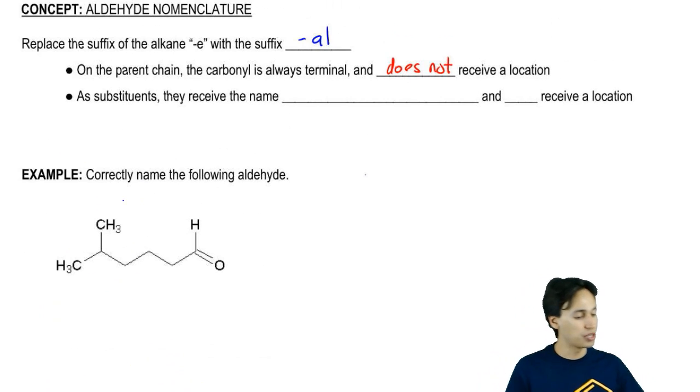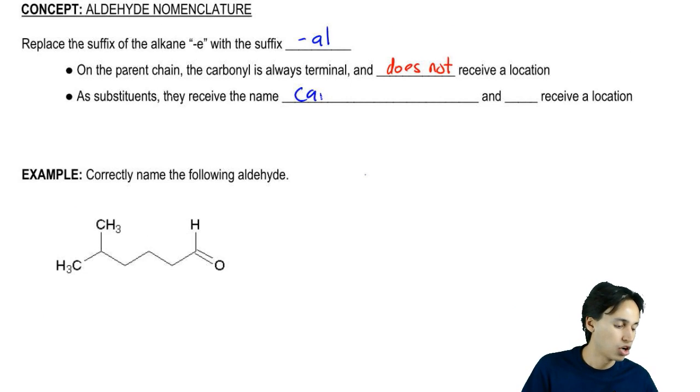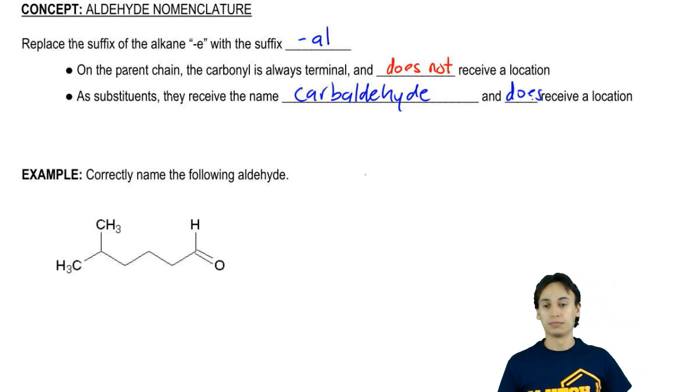When that happens, then aldehyde gets a special name because it's a substituent. So as a substituent, it receives the name carbaldehyde and it does receive a location.